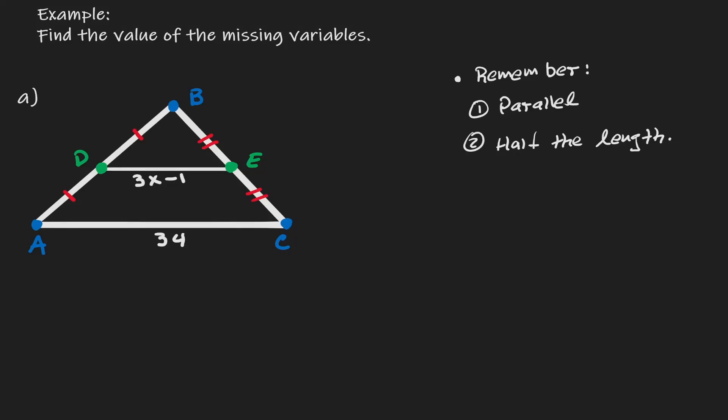The objective of this problem is to find the value of the missing variable, which in this case is x. Now let's examine the figure on the left hand side. We're working with a triangle, and we can see that there's something special going on with point D and point E — those points are the midpoints of each of those individual line segments.